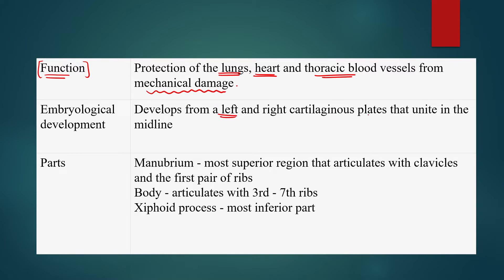Regarding embryological development, the sternum develops from left and right cartilaginous plates and unites in the midline. These bones in the rib cage start development from left and right cartilaginous plates or centers, and then unite in the midline at the sternum.